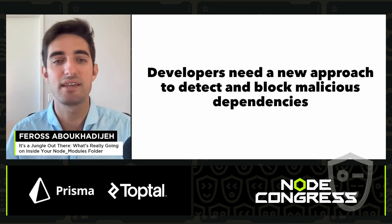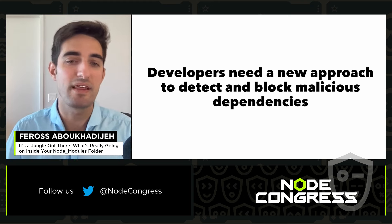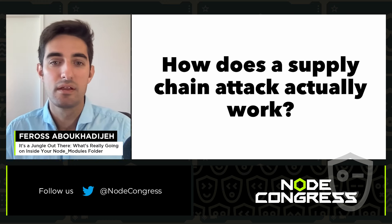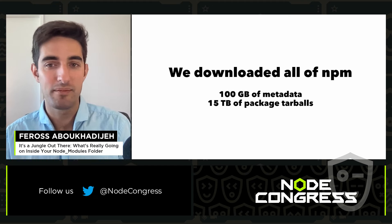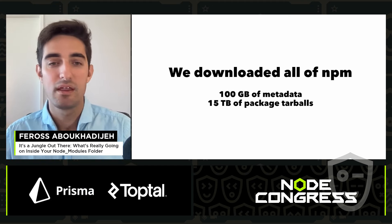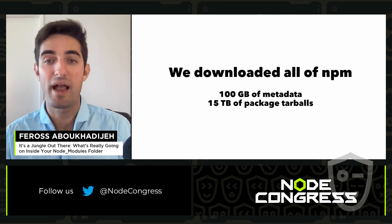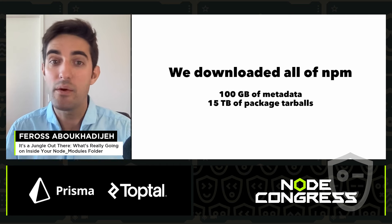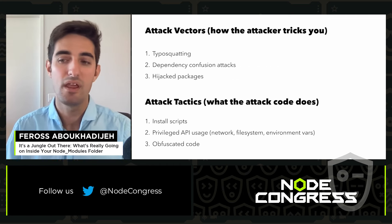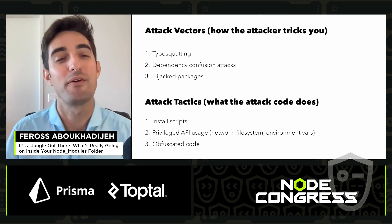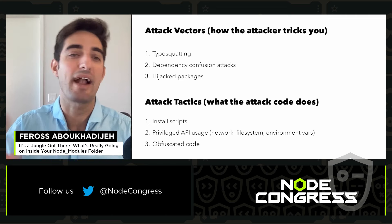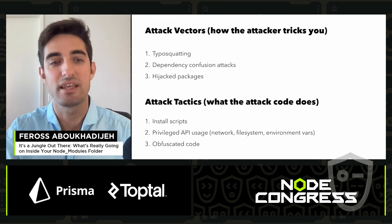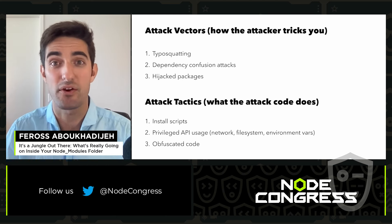We really need a new approach to detect and block malicious dependencies. To understand how supply chain attacks work, we downloaded every package on NPM and spent a few weeks poking around. The download was 100 gigs of metadata and 15 terabytes of package tarballs. As we analyzed the metadata and packages, we noticed a few trends in the types of attacks. There are attack vectors — how the attacker tricks you into running their code — and attack tactics — what the attack code actually does or how the attacker hides their code.